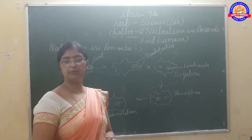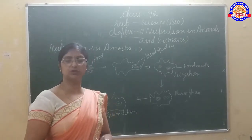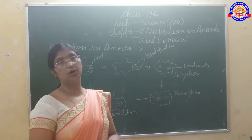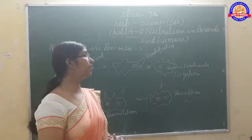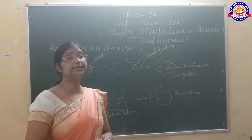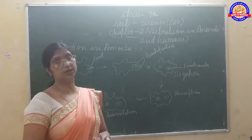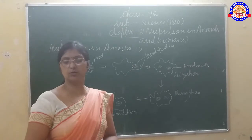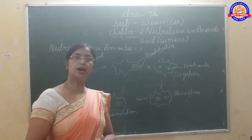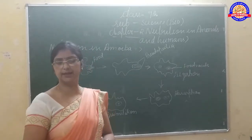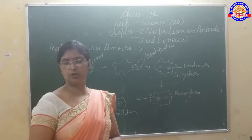Amoeba is an organism made up of single cells. This is why it is unicellular — it is an organism made up of single cells.